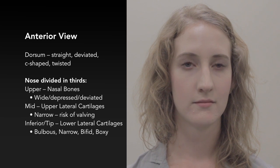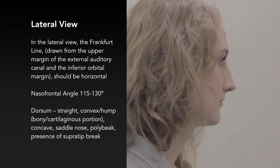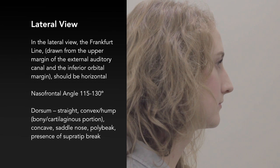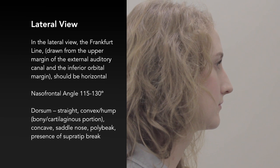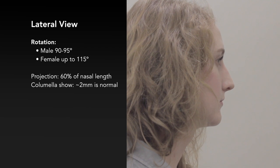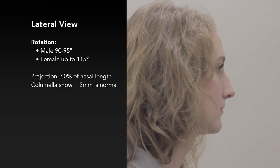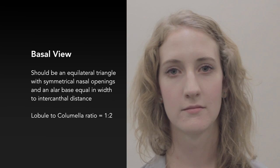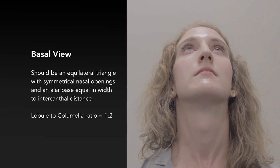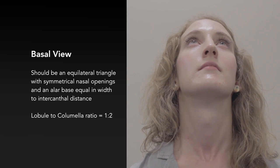On the lateral view, the nasofrontal angle is within normal range. The dorsum is straight with a supratip present. The tip is appropriately rotated for a female with an approximate angle of 100 degrees, and the nose is not over- or under-projected. There is no excess columnar show or retraction. On the basal view, there is no columnar scar to suggest previous open surgery. The basal view is symmetrical, as are the nostril openings, with a normal lobule-to-columellar ratio.